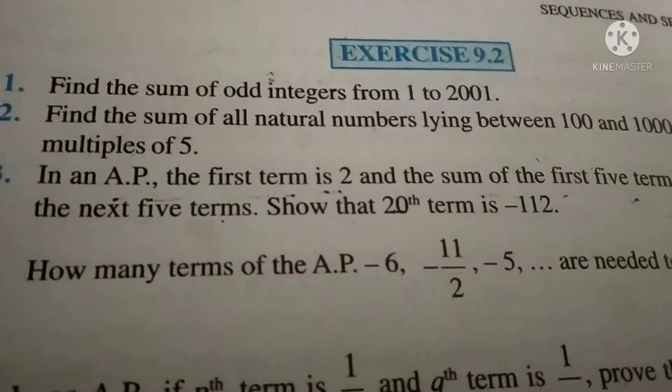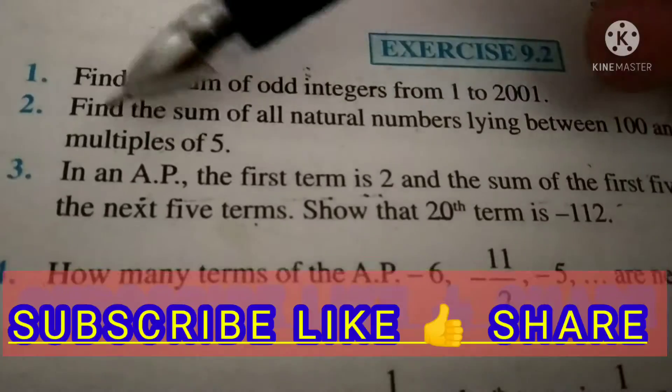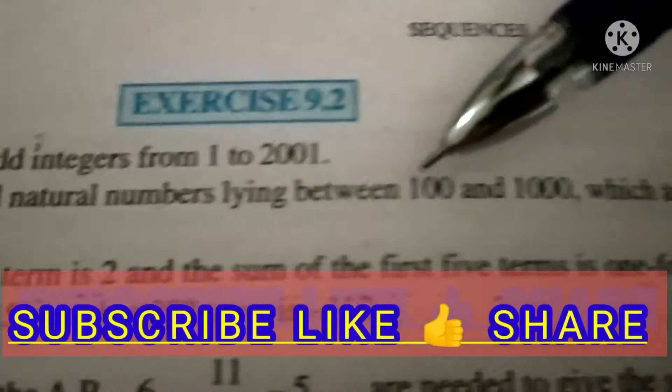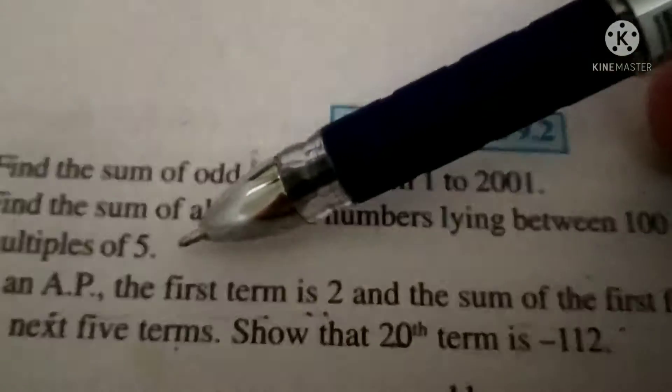Good morning to all your friends and viewers. Today's topic is Exercise 9.2, question number 2. Find the sum of all natural numbers lying between 100 and 1000 which are multiples of 5.